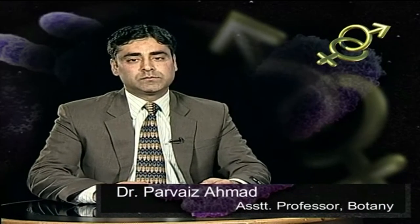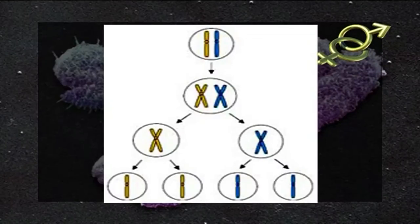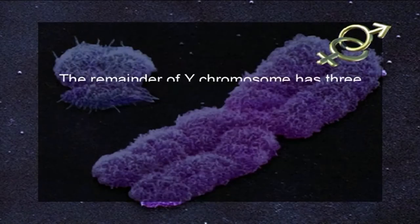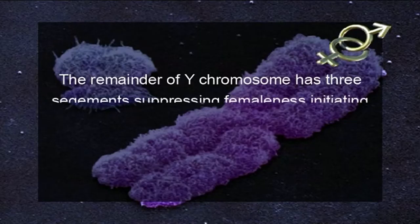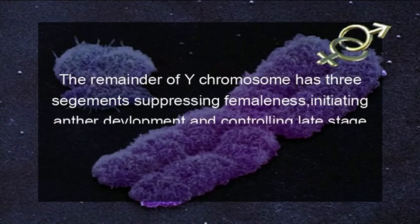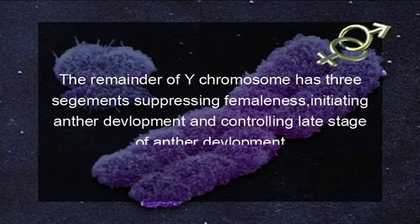The presence of a single Y chromosome causes a male individual. The different segments of Y and X chromosomes have been identified which control the different stages of development of sex organs. The X and Y chromosomes have a common segment that helps in pairing and regular disjunction of X and Y chromosomes during meiosis. The remainder of the Y chromosome has three segments: suppressing femaleness, initiating anther development, and controlling late stage of anther development. The X chromosome has a differential segment that promotes femaleness in the absence of the female-suppressing segment on the Y chromosome.